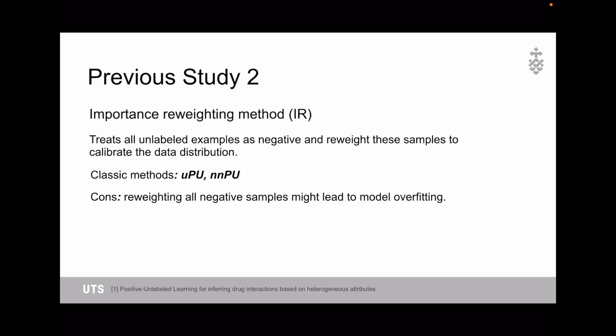The second line of method is called the importance-reweighting method. It treats all unlabeled samples as negative ones and reweights these samples to calibrate their data distribution. Some classic methods are called unbiased PU learning and non-negative PU learning. The disadvantage of this method is that reweighting all negative samples might lead to model overfitting, which will be discussed later.